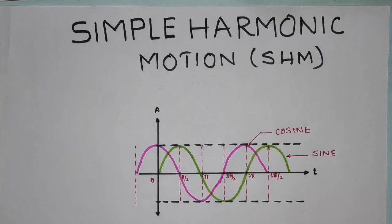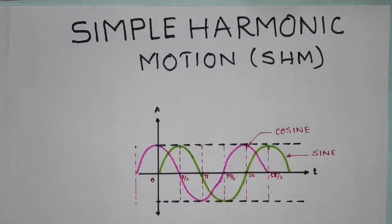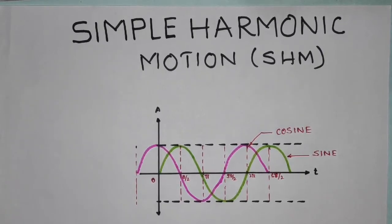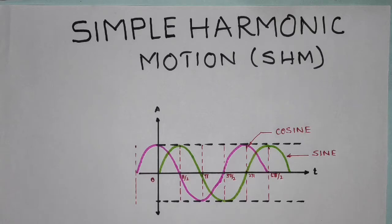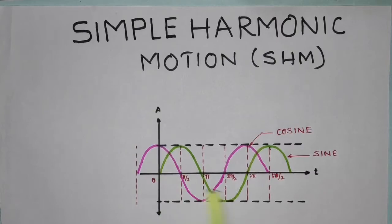Welcome to lecture number 4 on simple harmonic motion. Before we see simple harmonic motion, let us first understand what is harmonic motion. A motion which repeats itself after an equal interval of time is called a periodic motion — a definition we covered in the previous lecture on definitions in mechanical vibrations. This periodic motion has an equal interval of time called the period, and harmonic motion is one form of periodic motion, represented in terms of a sine or cosine function.